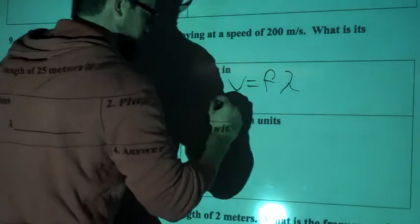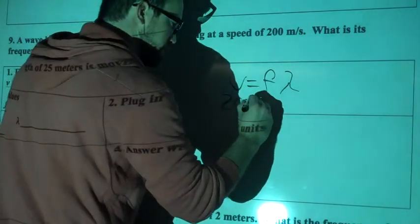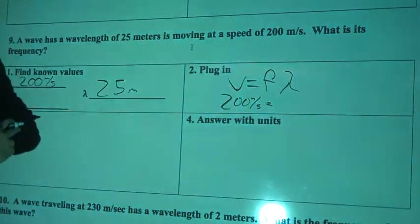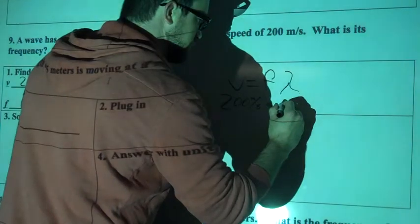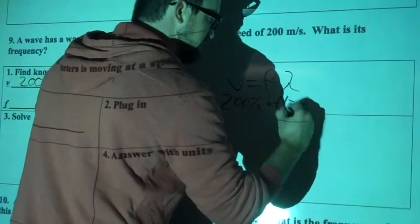OK, my velocity is 200 meters per second. OK, don't know frequency, but I know lambda is 25. So frequency, and 25 is lambda.